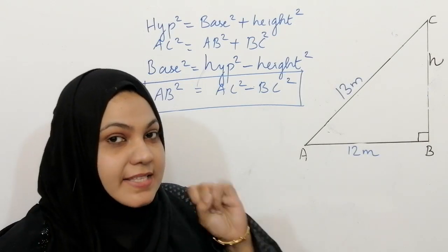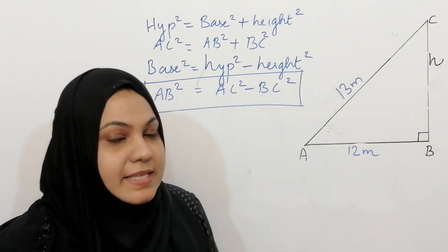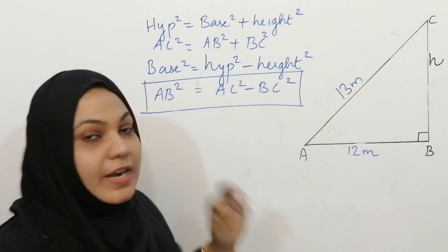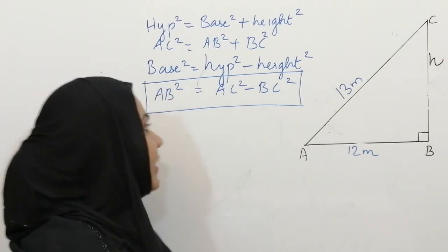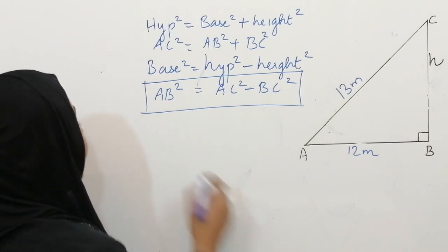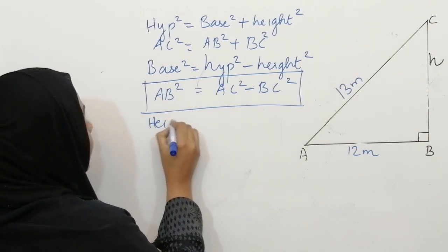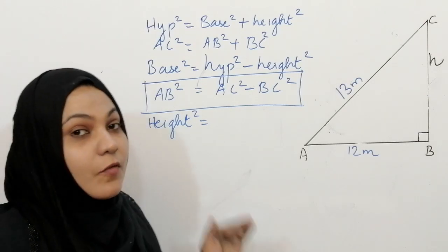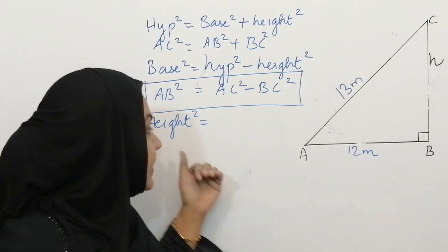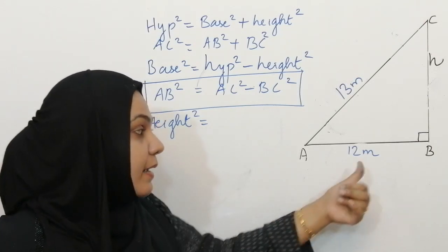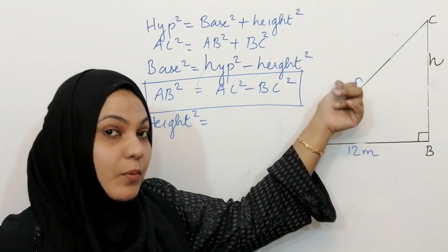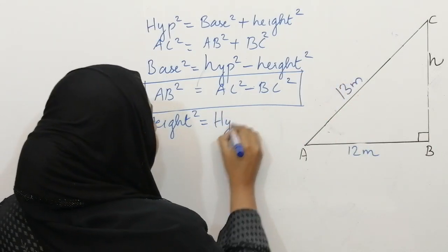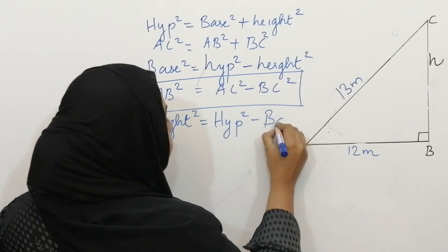We have finished hypotenuse square and base square. Our third part is to find the height square. For finding height square, we have to subtract base square from hypotenuse square. So height square is equal to hypotenuse square minus base square.